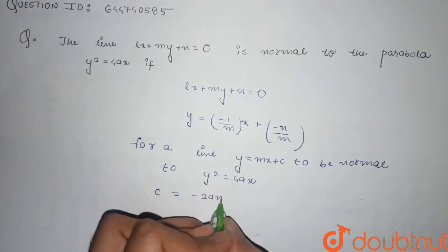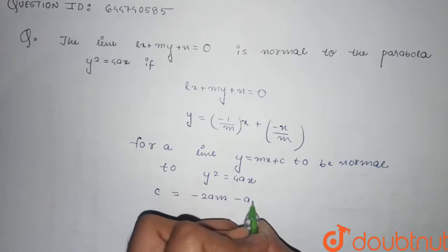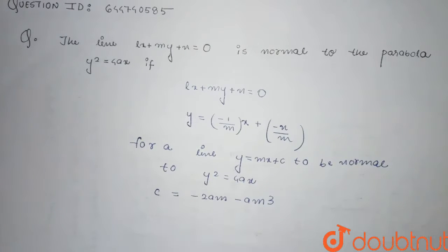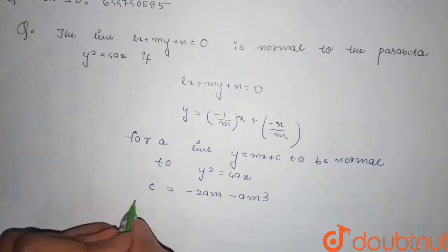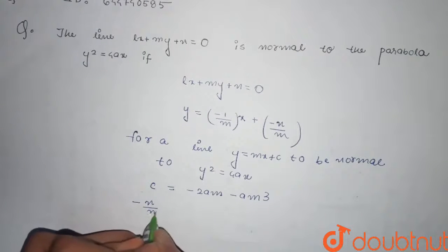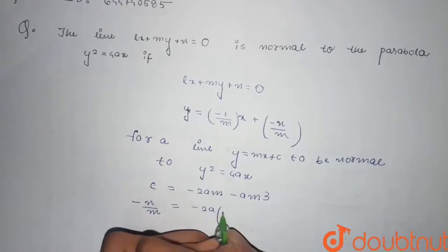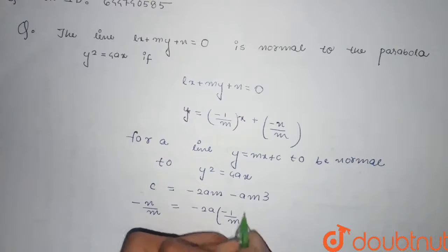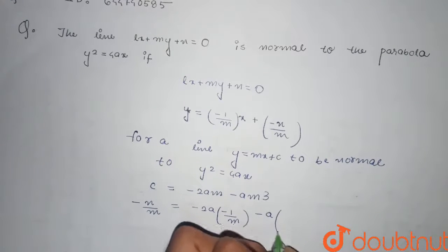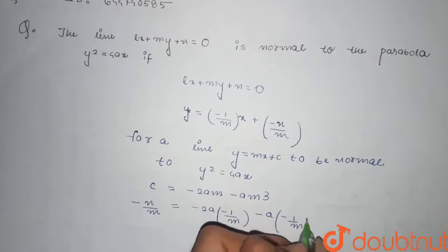So here c = -n/m, so -n/m should be equal to -2a times the slope (-l/m) minus a times (-l/m)³.